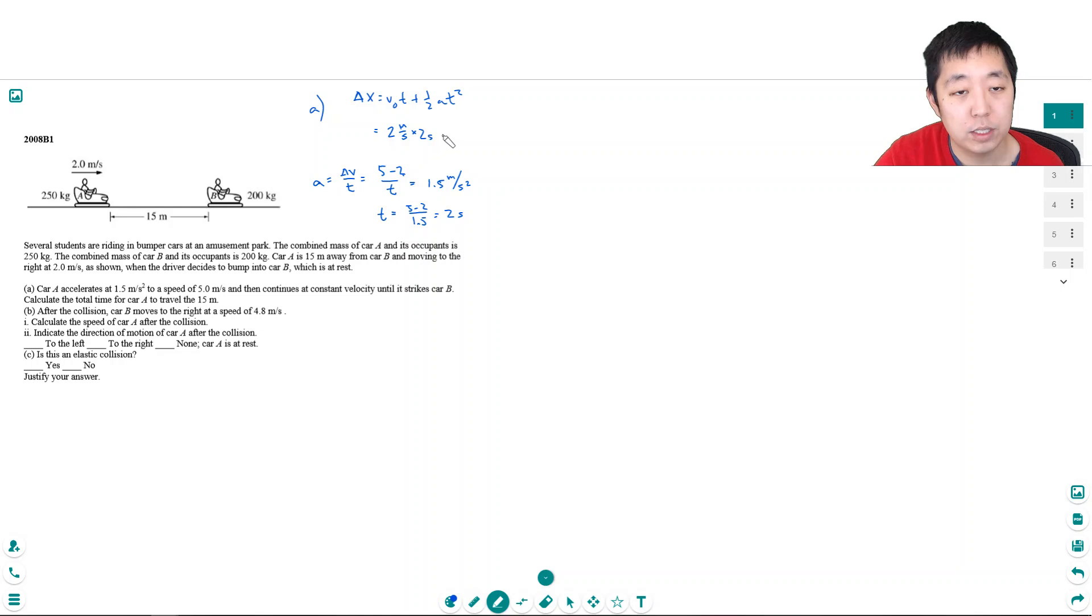So that's times 2 seconds plus one half. Again, the acceleration is 1.5 meters per second squared times 2 seconds squared. So that's 4. That's 4 times one half, that's 2, 2 times that's 3, that's 7 meters. Okay, so during the time of acceleration he travels 7 meters and it takes 2 seconds to go this 7 meters.